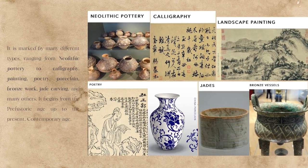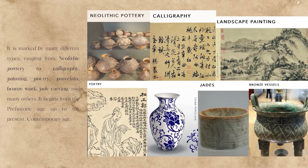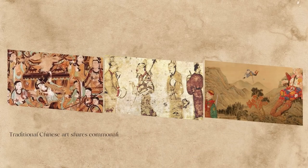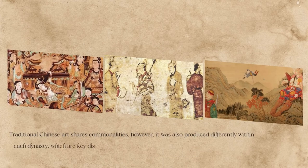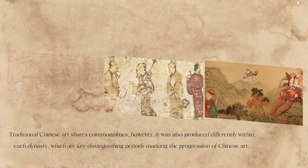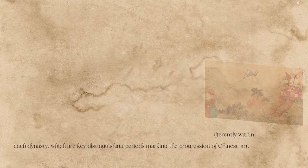It also includes jade carving and many others, and begins from the prehistoric age up to the present contemporary age. Traditional Chinese art shares commonalities; however, it was also produced differently within each dynasty, which are key distinguishing periods marking the progression of Chinese art.